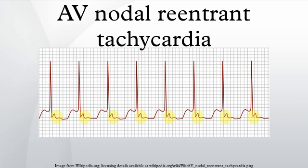Signs and symptoms: The main symptom is the sudden development of rapid regular palpitations. Often, no precipitant is present, although some report development of symptoms in stressful situations, consumption of alcohol or caffeine, or other factors. In some cases, the onset of the tachycardia is associated with a brief drop in blood pressure. When this happens, the patient may experience dizziness or rarely syncope.